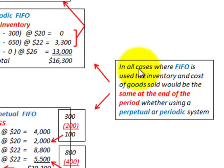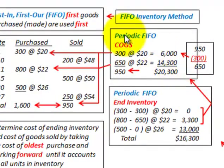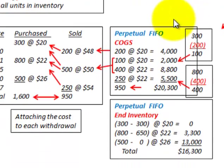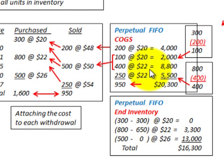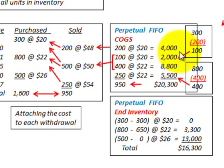An important point: when FIFO is used, the ending inventory and cost of goods sold are the same at the end of the period whether using the periodic or perpetual method. Periodic FIFO gave us $20,300 for cost of goods sold and $16,300 for ending inventory — exactly matching perpetual FIFO's $20,300 cost of goods sold and $16,300 ending inventory. That wraps up FIFO inventory accounting using both methods.